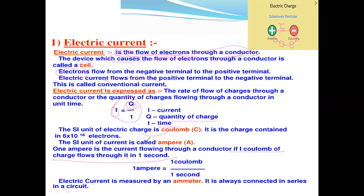The SI unit of current is Ampere — SI unit means international standard units. One Ampere equals one Coulomb of charge flowing through a wire in one second. Electric current is measured using an ammeter, which is always connected in series in a circuit.